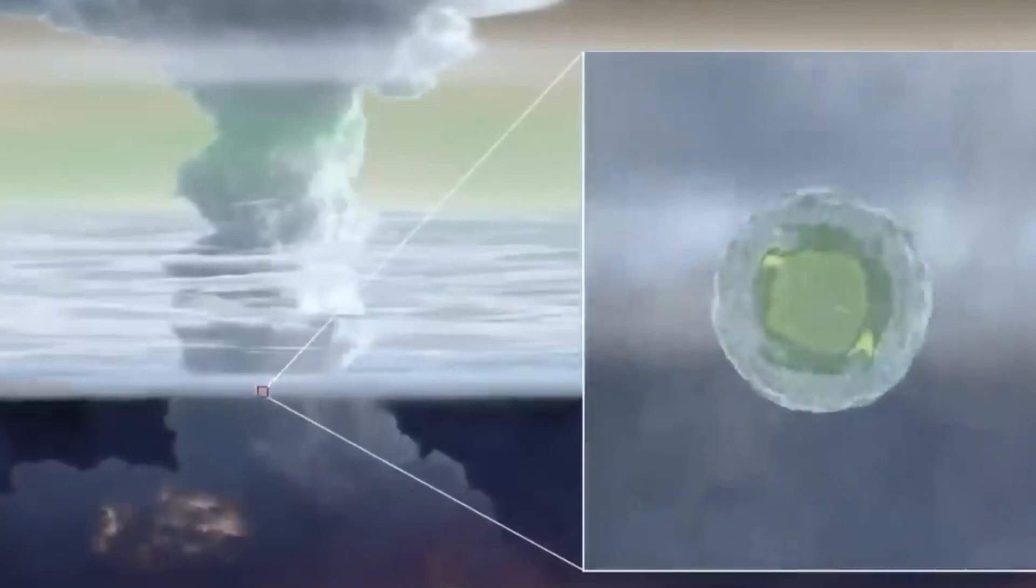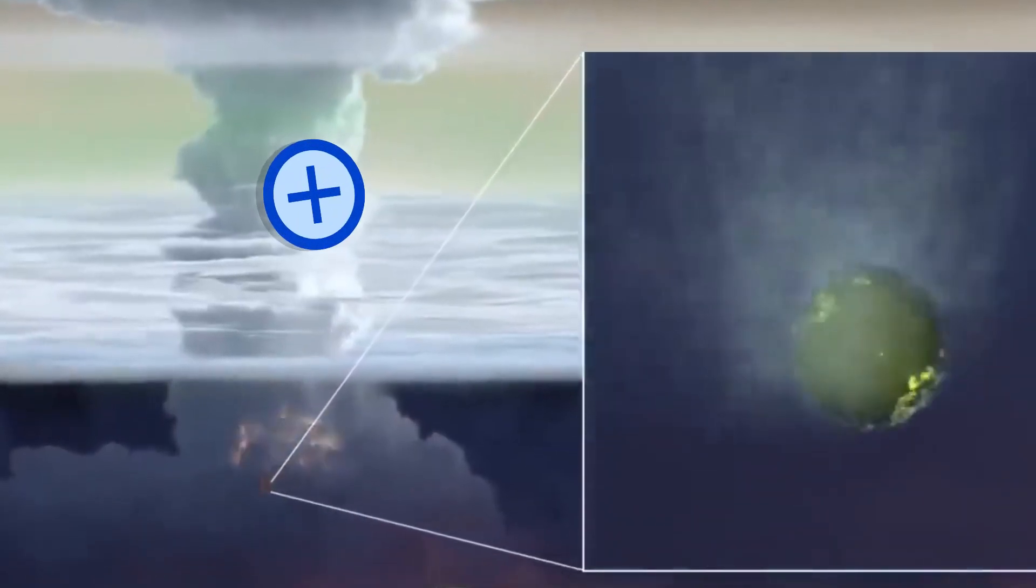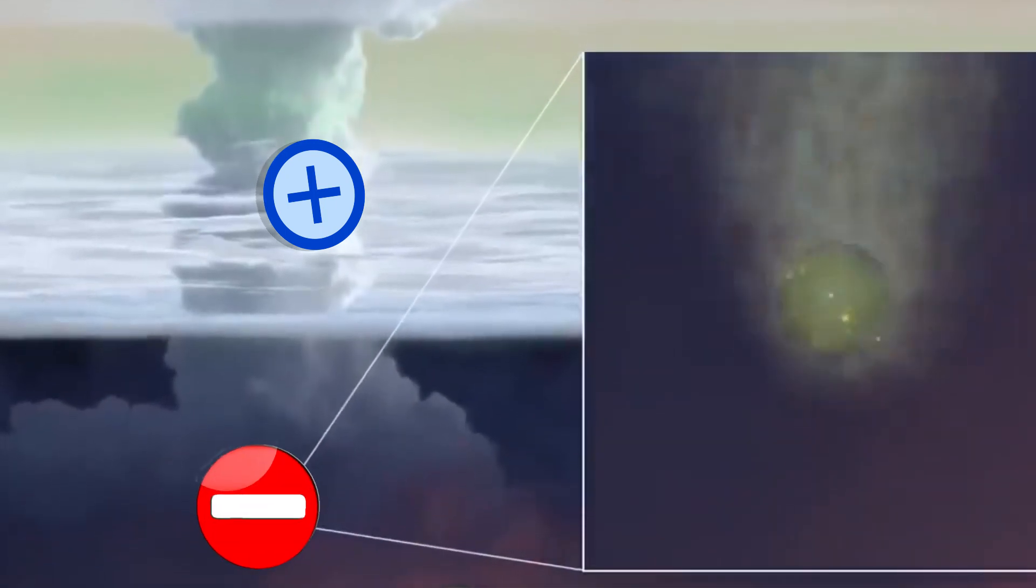After that, the collisions between the ice and water particles caused by the storm strip electrons from the water droplets. This transforms the storm cloud into a massive powerhouse with a positive charge at the top and a negative charge at the bottom.